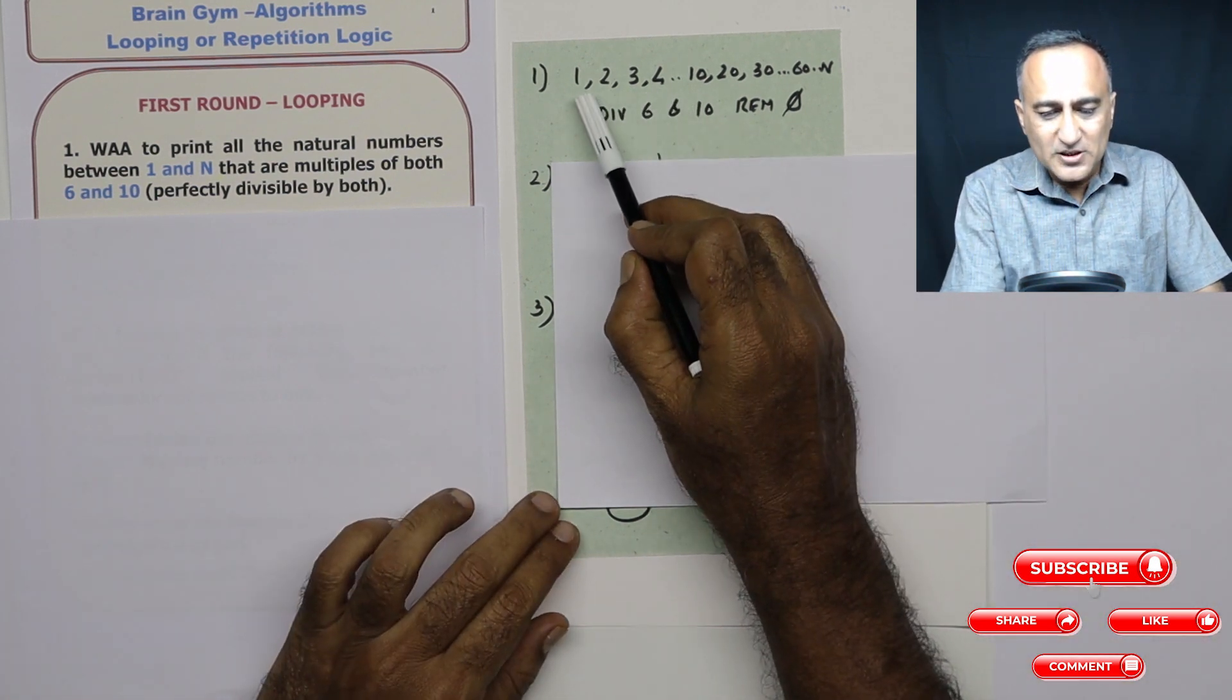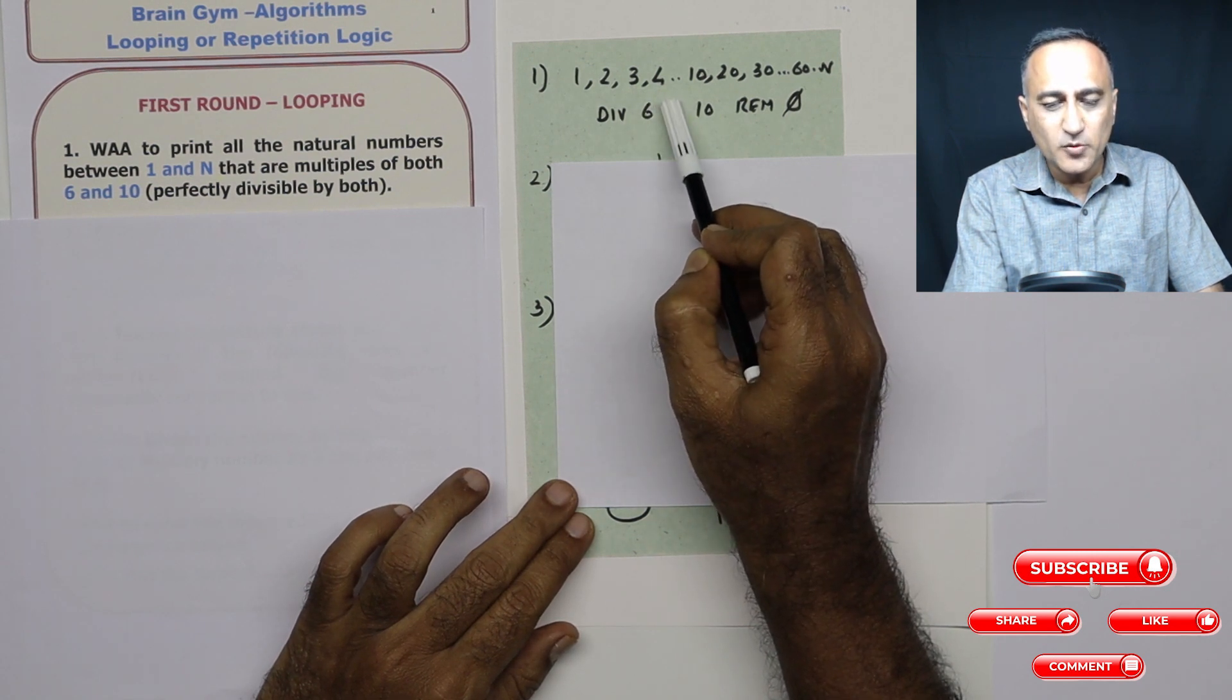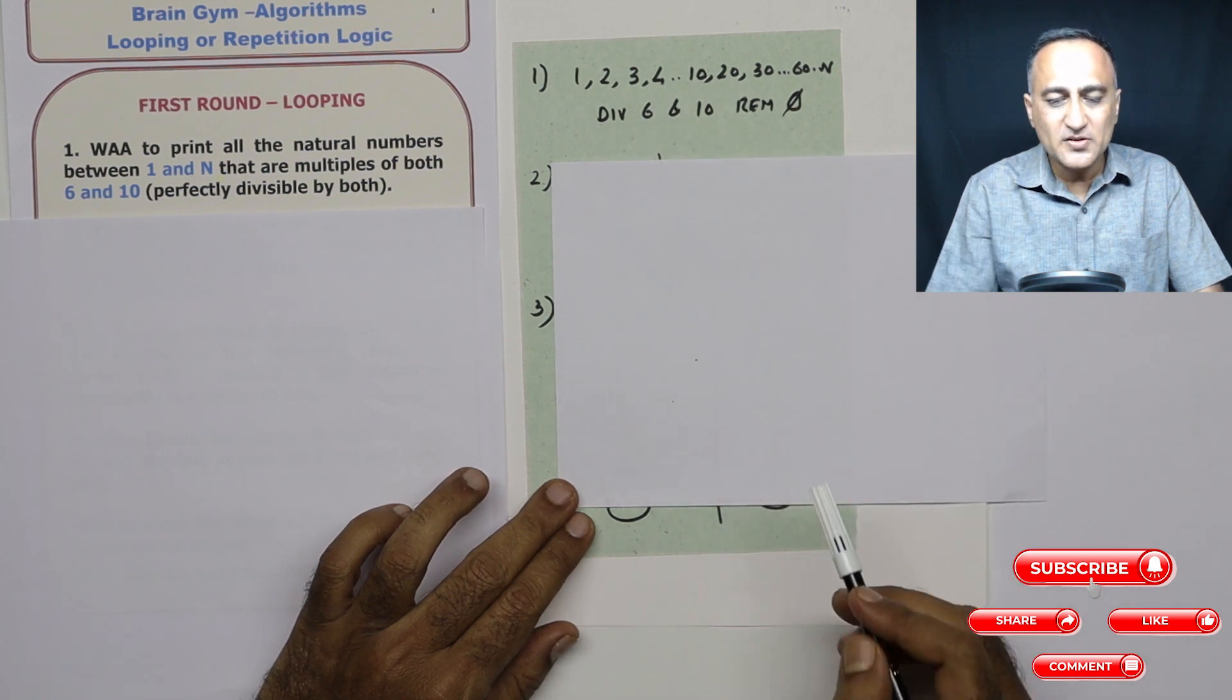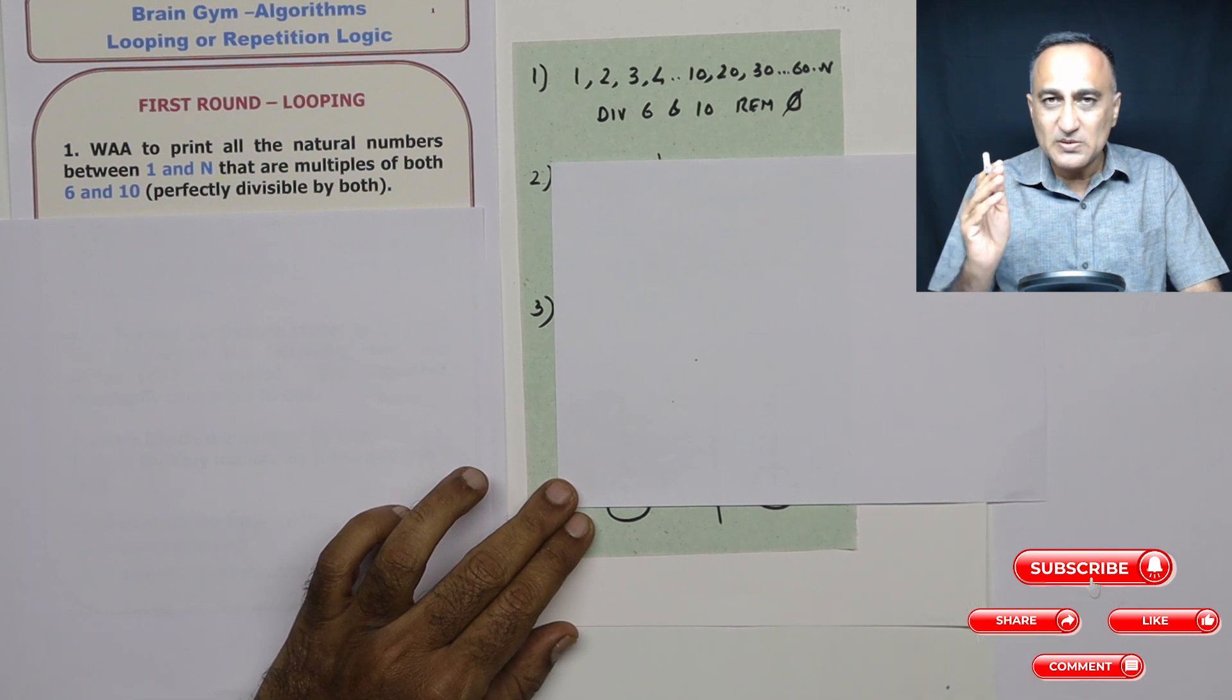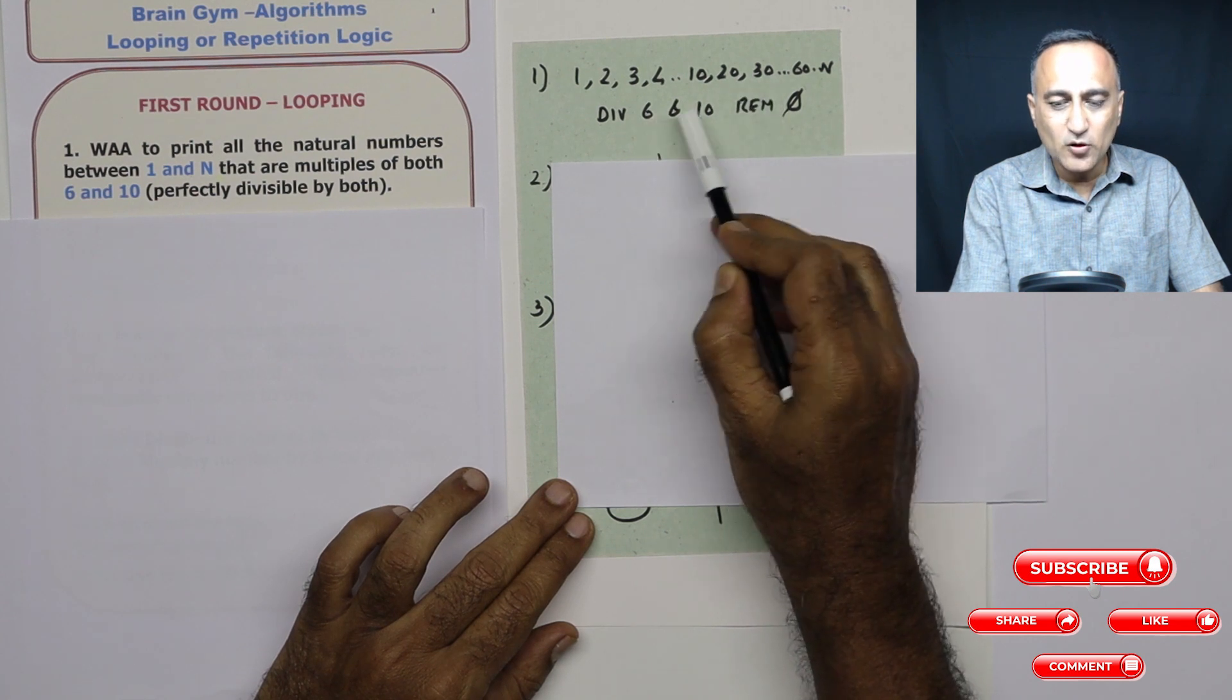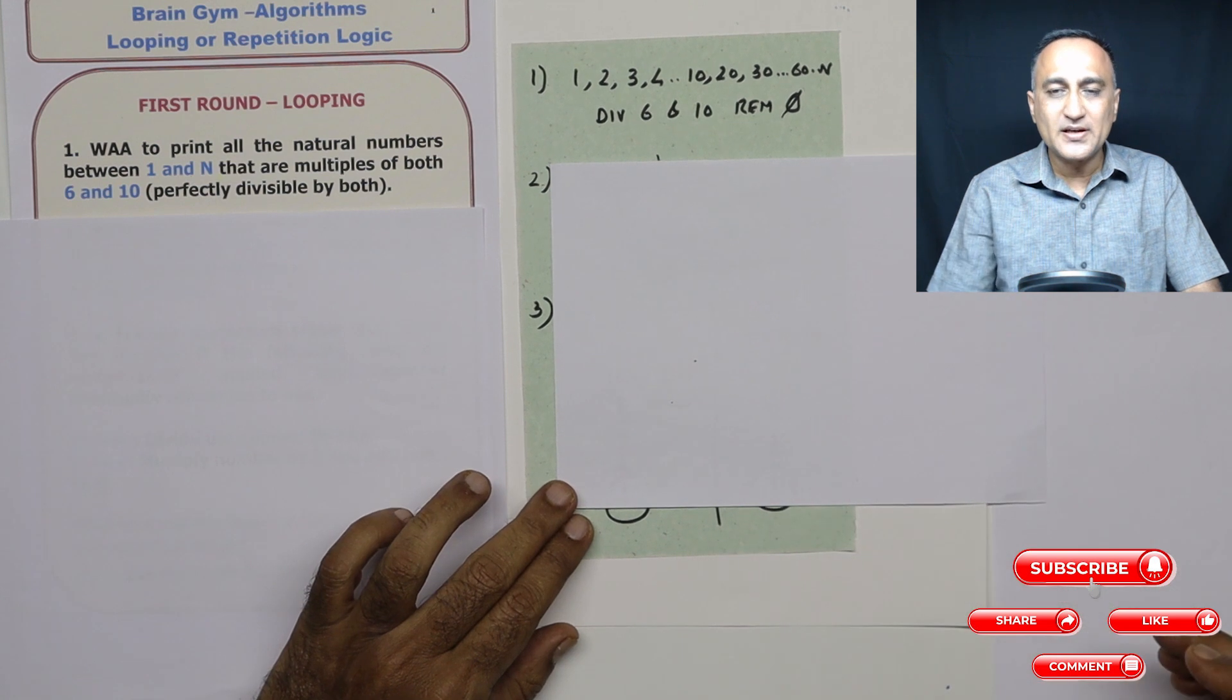So if you take any of these numbers one, two, three, four, if you try to divide by six, the remainder is not going to be zero, as well as division by 10, the remainder is not going to be zero. So the first number you can think of which is divisible by both six and 10 happens to be 30. 30 mod six is zero, 30 mod 10 is zero. So you will print 30 on the output screen.